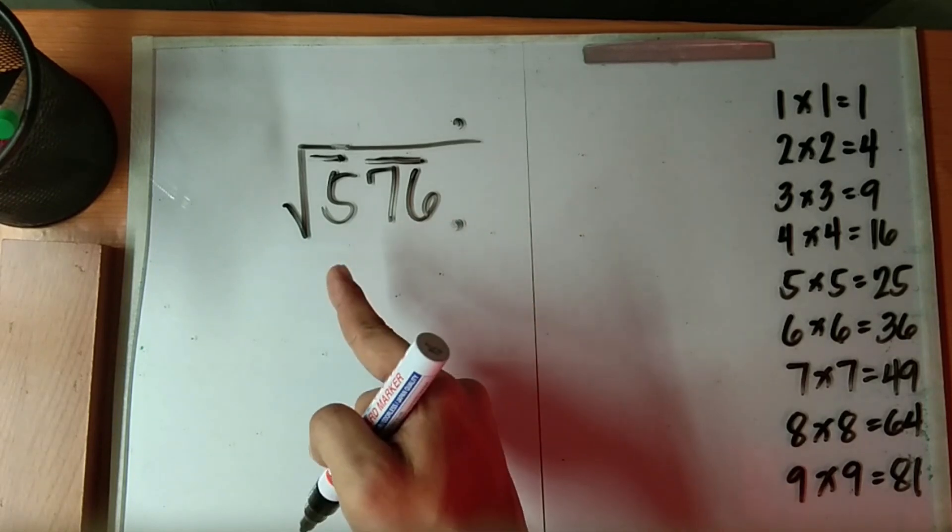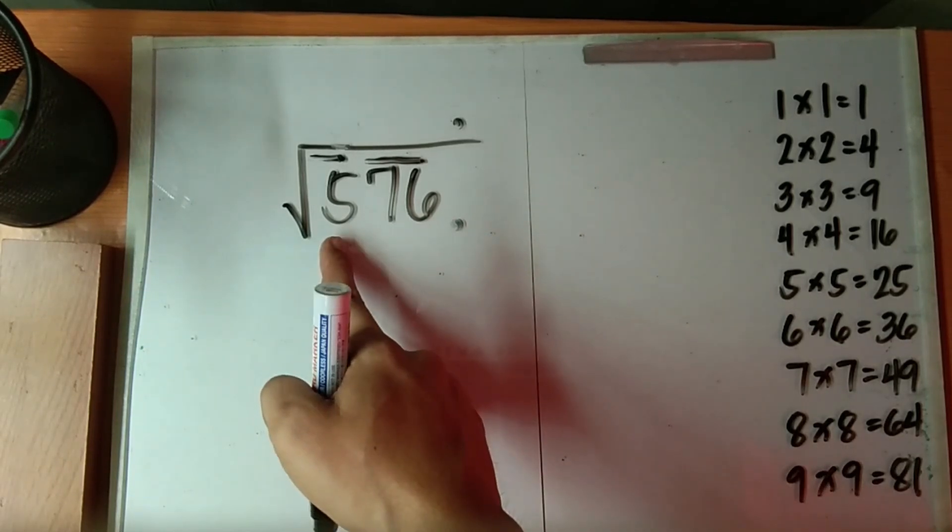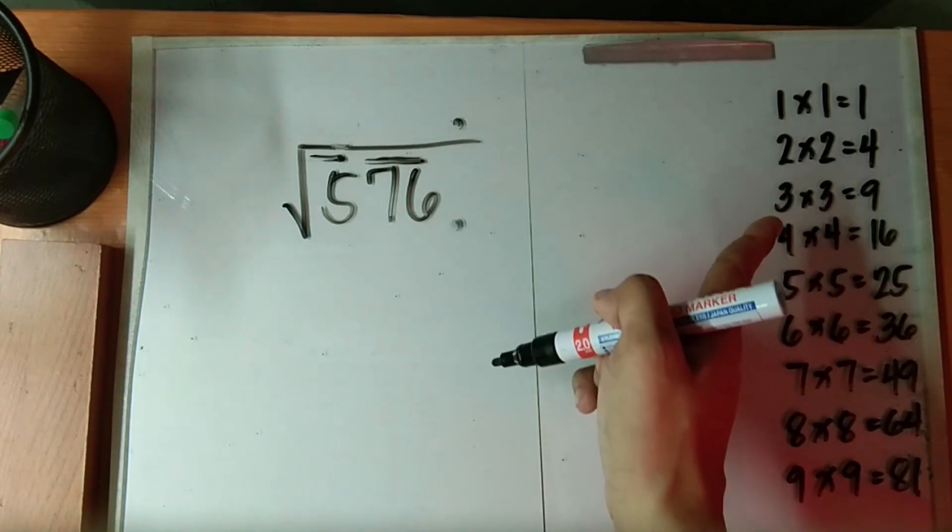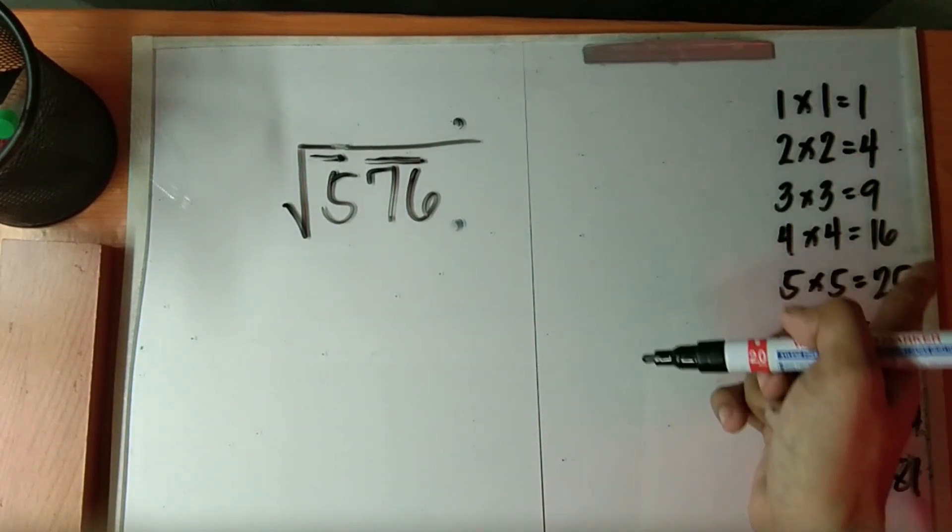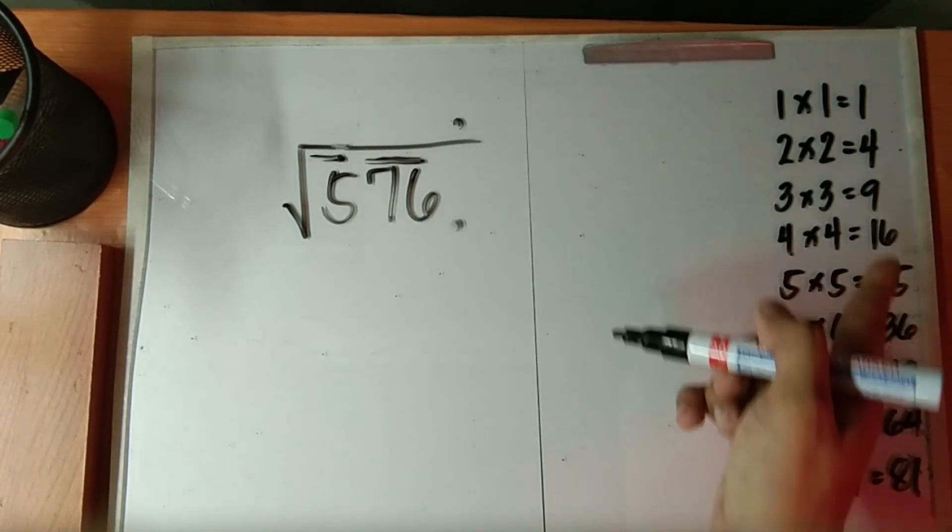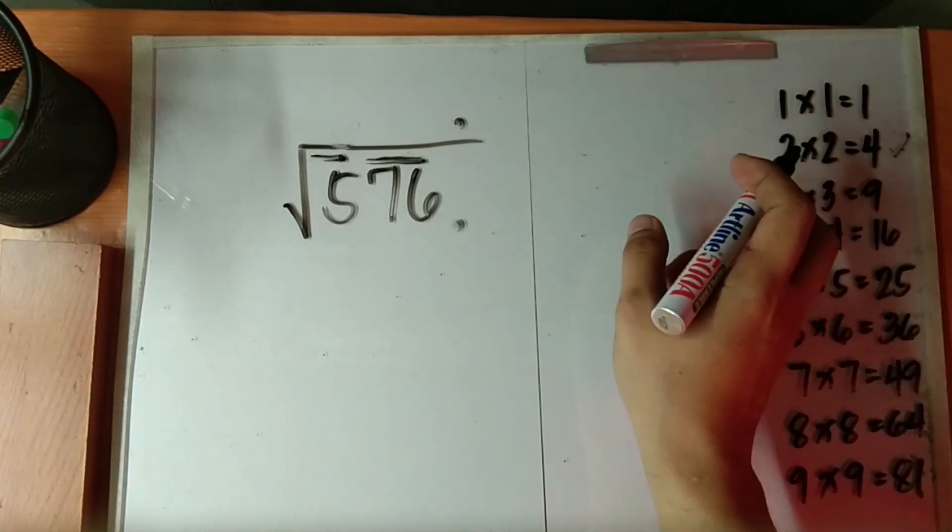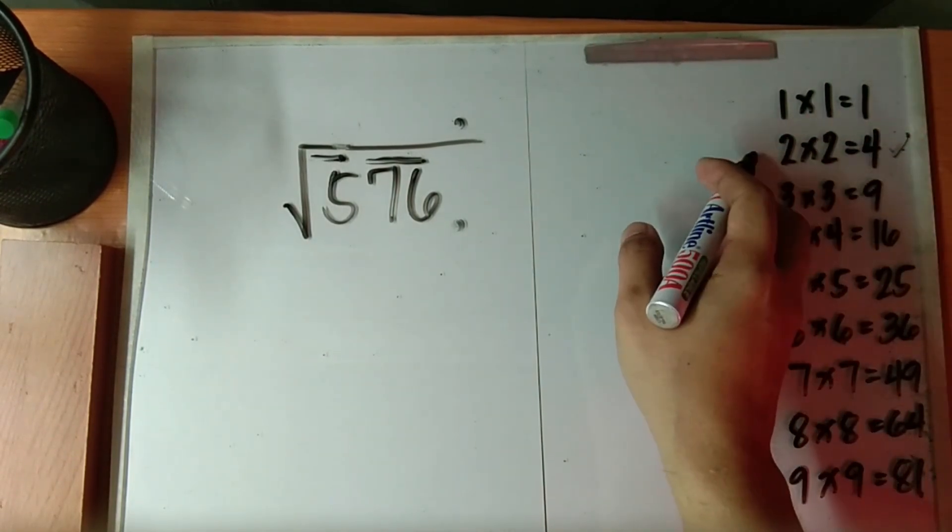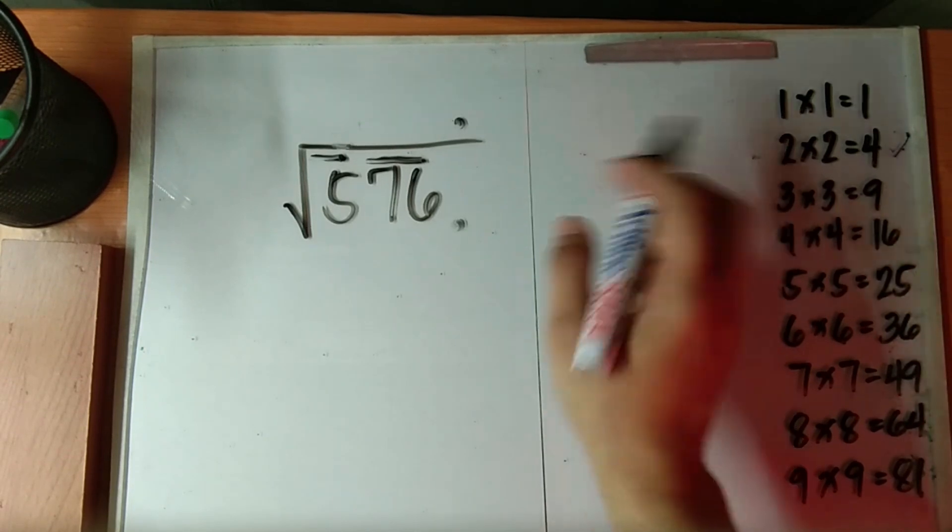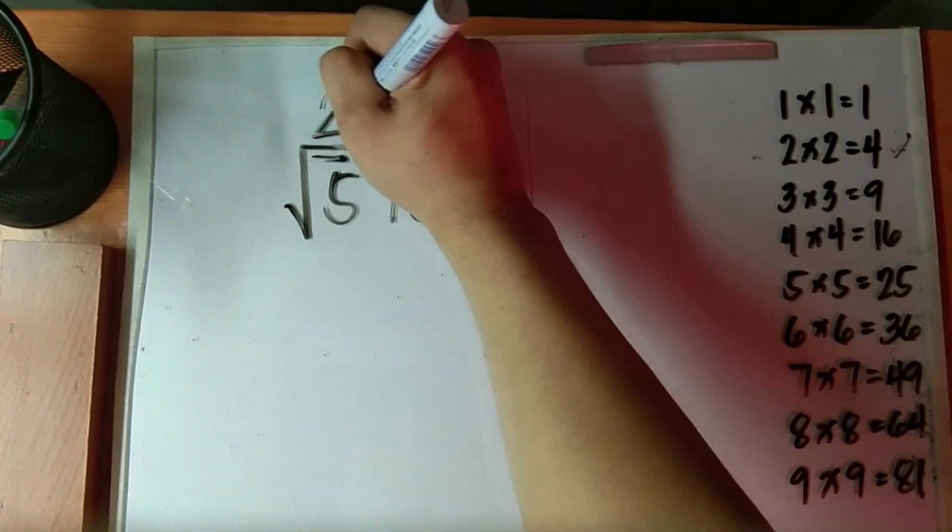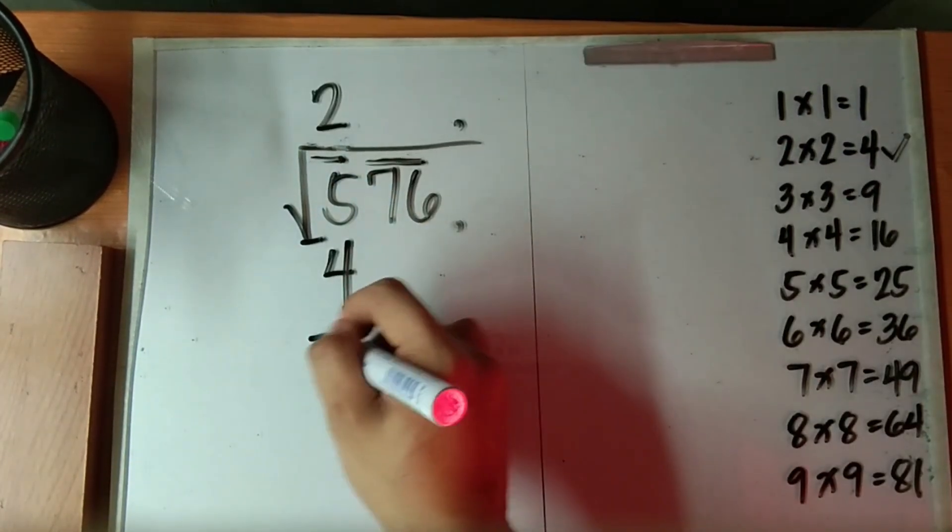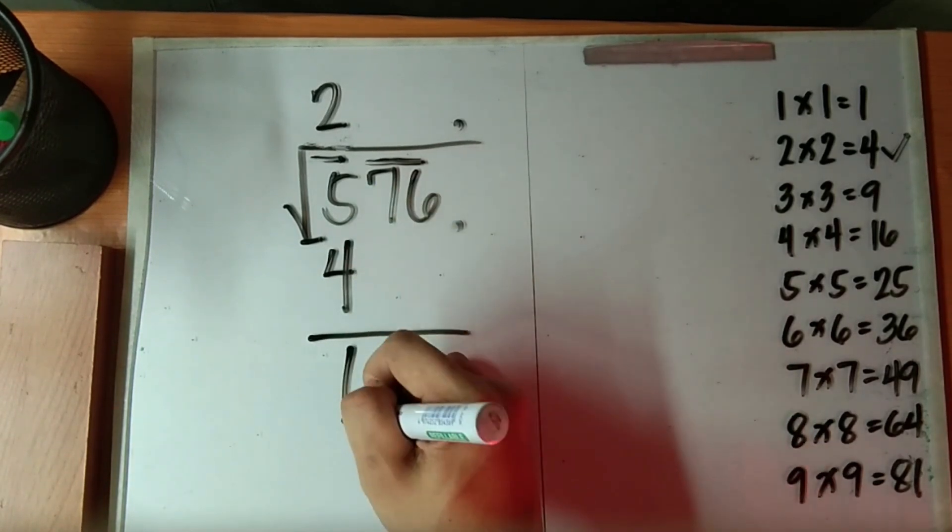So after that, get the leftmost number, that is 5. Observe the product in your list, which of these products is equal or lesser than 5. Now that is 4. Now get the square root of 4, which is 2. Place it on top of 5. Then we will have a difference of 1.